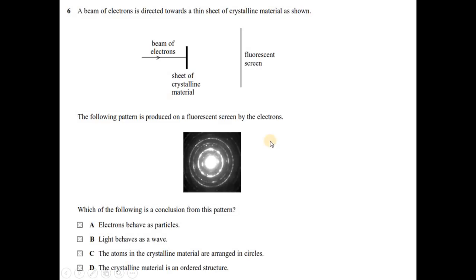Question number 6. A beam of electrons is directed towards a thin sheet of crystalline material as shown. Typical experiment regarding electron diffraction. This is a metallic sheet or crystalline structure. The following pattern is produced on the fluorescent screen by the electrons, electron diffraction pattern. Which is the conclusion from this pattern? Students might confuse looking at the circle diagram thinking atoms are arranged in circles. No, it is not. The material contains a crystalline structure with some order. The crystalline material is an ordered structure, a kind of lattice from which electrons are diffracted and produce the spectrum. So your option is B.